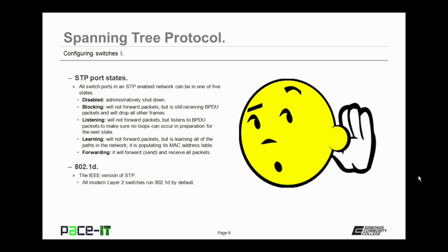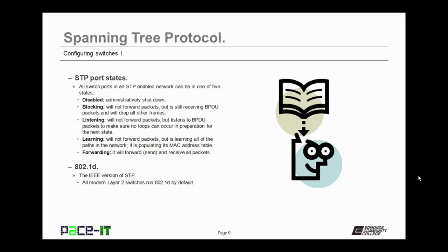Then there's the listening state. In this state, the port will not forward packets, but listens to BPDU packets to make sure that no loops can occur, in preparation for the next state. Then there's the learning state, where the port will not forward packets, but is learning all of the paths in the network and populating its MAC address table in preparation for the next state.